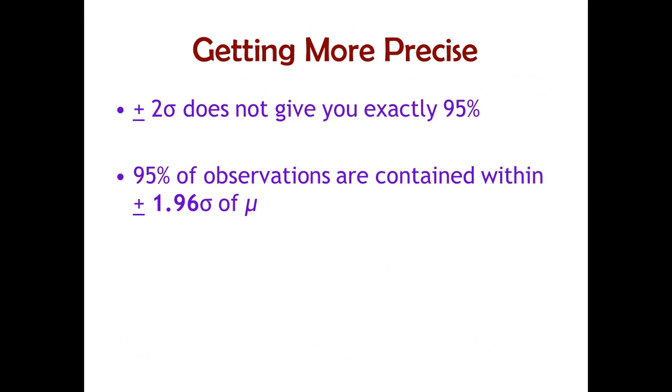So speaking of getting precise, two standard deviations doesn't quite give you exactly 95%. You could use P norm or Q norm or the table in the back of your book and verify that actually you would see...